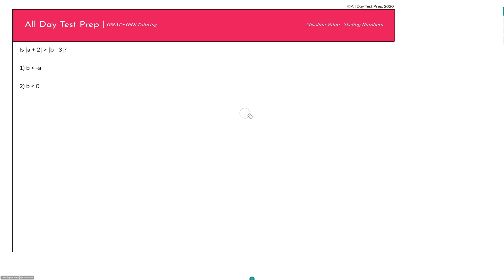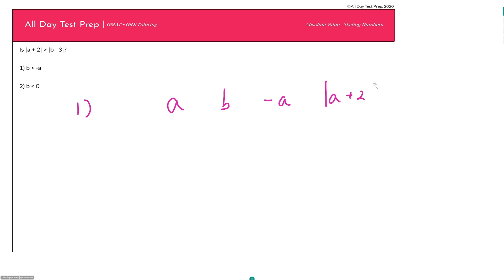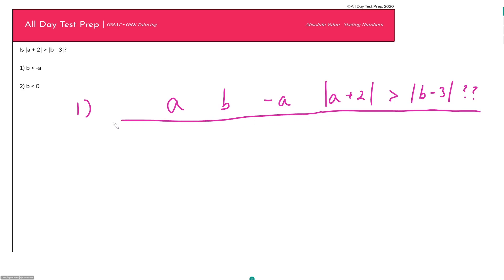I'll delete the data sufficiency answer choices — you should have those memorized. Statement one says b is less than negative a. Let's design our experiment using an organized table. We need columns for a, b, and negative a, making sure b is less than negative a. Then we answer our question: is the absolute value of a plus two greater than b minus three?